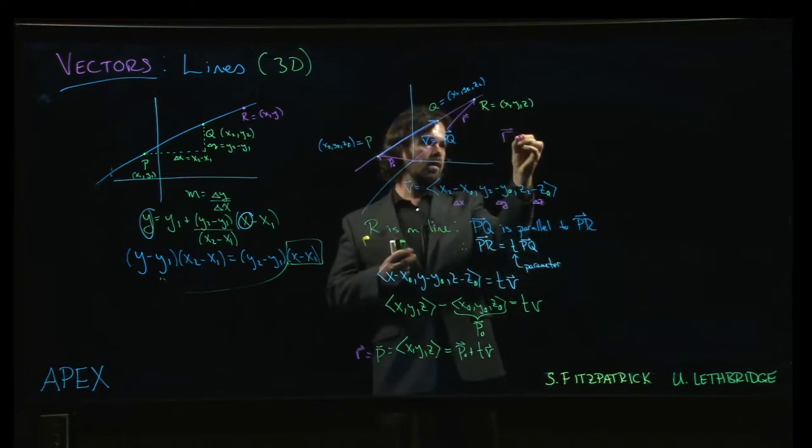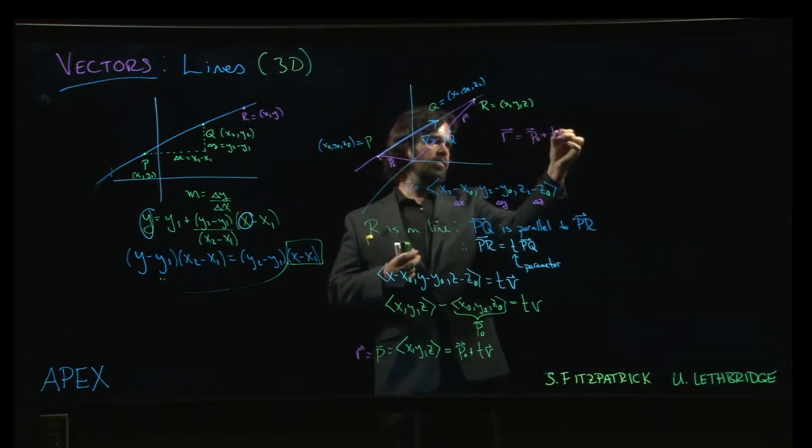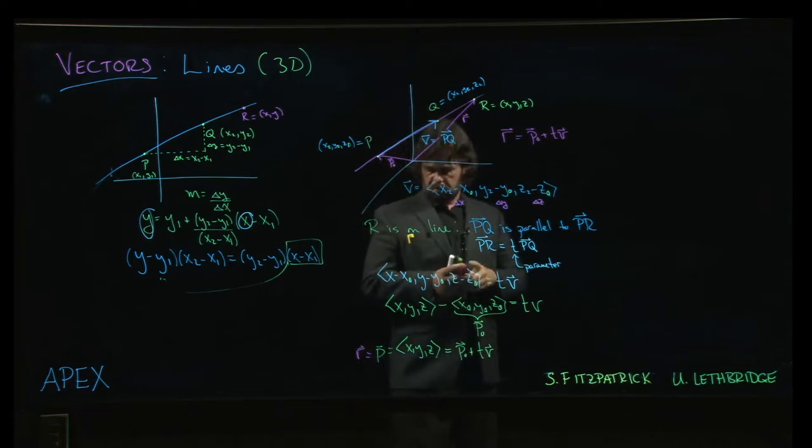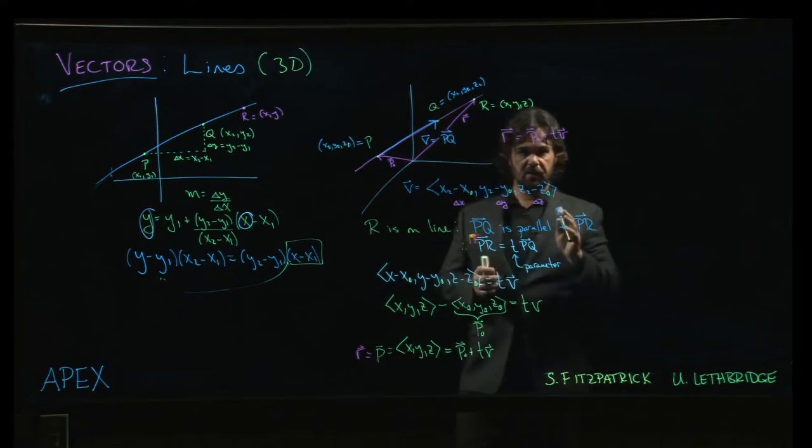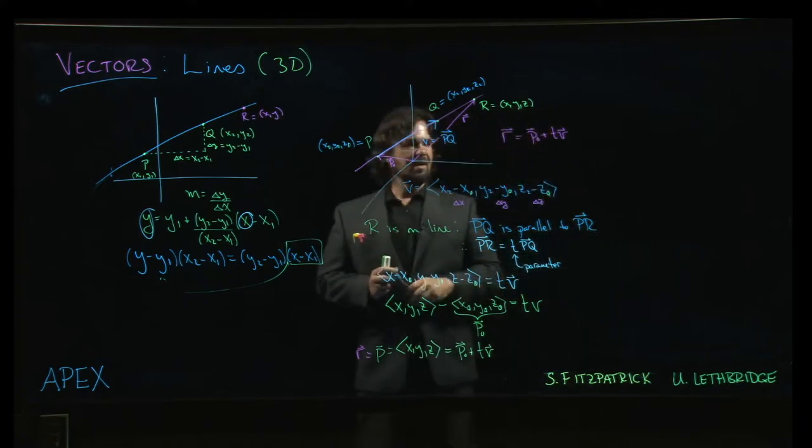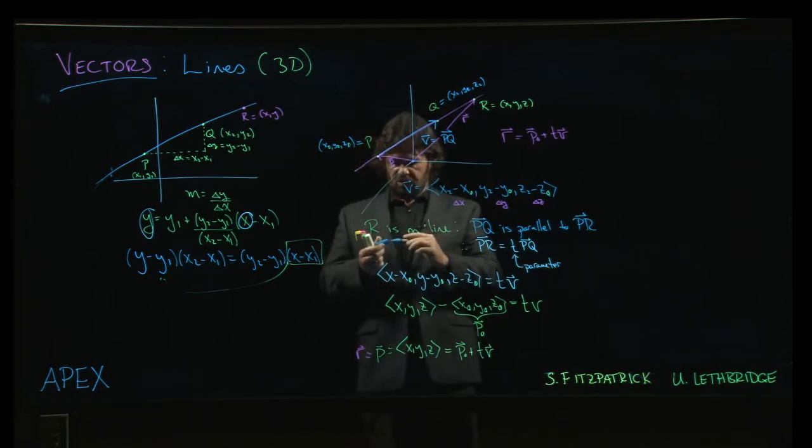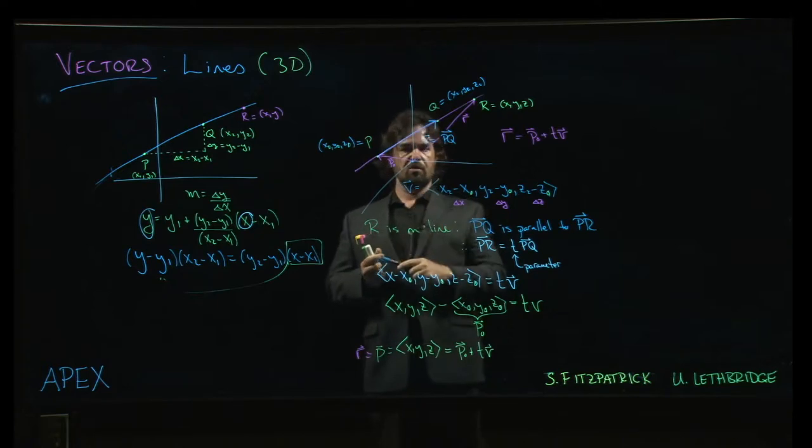And so what are we really saying? We're saying r is p0 plus t times v. And, you know, remember when we first talked about vectors, we talked about vectors in the context of like giving directions. Well, this makes perfect sense because we imagine everyone starts at the origin. The origin's our starting point. So what are we really saying here? We're saying start at the origin.